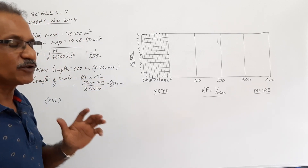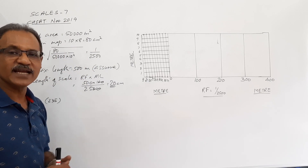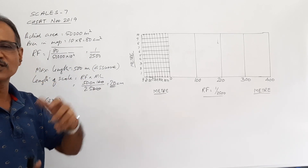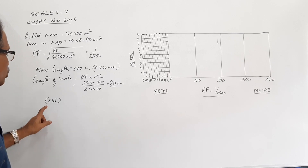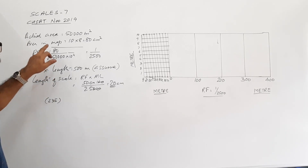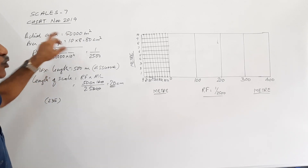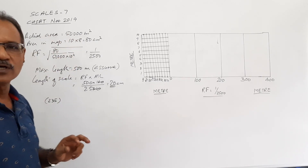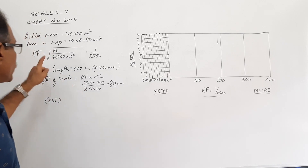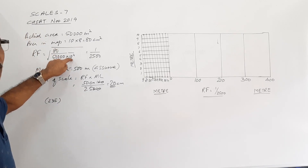You are requested to construct a diagonal scale to measure up to a meter — that's your smallest unit — and you are asked to show 235 meters on it. First of all, from the given data you have to find out the RF. RF is the square root of area in the drawing divided by actual area, that is square root of 80 divided by 50,000 into 10 to the power of 4.